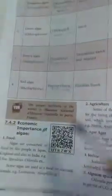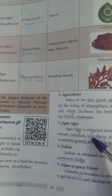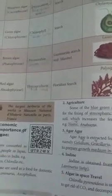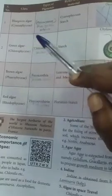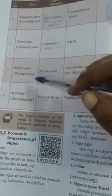Today's homework: write any three economic importances of algae that you have seen in the classroom — for example, food, agriculture, and agar-agar. Next class, we will see the types of pigments. This class covered blue-green algae. Next class we will see fungi. Thank you, students.